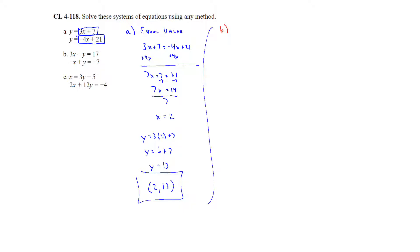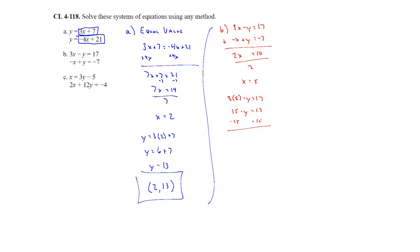For part b, we have 3x minus y equals 17 and negative x plus y equals negative 7. This is set up for elimination — the variables are all on one side and the y's are already opposites of each other. Adding the equations eliminates y, giving 2x equals 10, so x equals 5. Plugging back into the first equation: 15 minus y equals 17, subtract 15, giving negative y equals 2, so y equals negative 2. The solution is x equals 5, y equals negative 2.